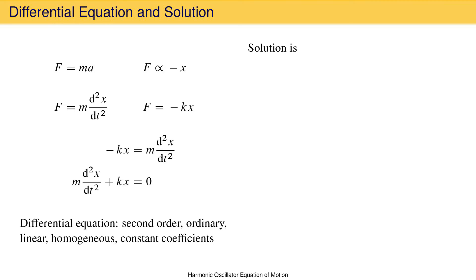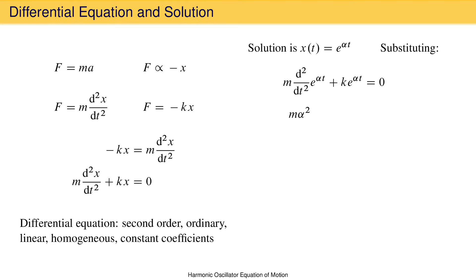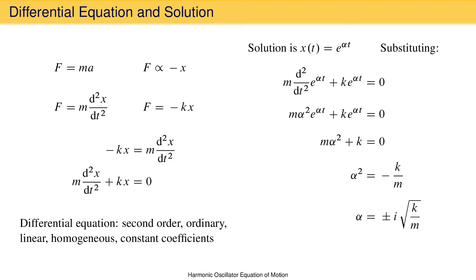The solution to every second-order ordinary linear homogeneous differential equation with constant coefficients has the form displacement equal to e raised to some constant alpha times time. Substituting this into the differential equation and taking the second derivative gives mass times alpha squared times e to the alpha t plus the force constant times e to the alpha t equal to zero. Dividing by e to the alpha t gives mass times alpha squared plus the force constant equal to zero. Solving for alpha gives plus or minus i times the square root of k over m.